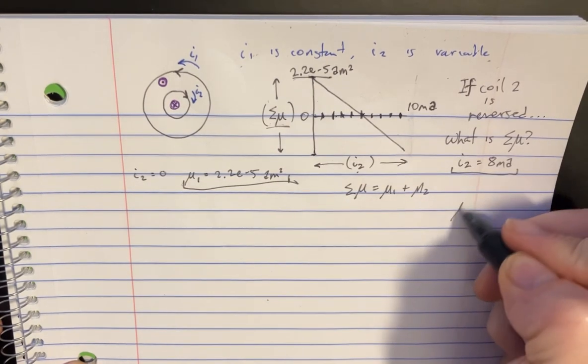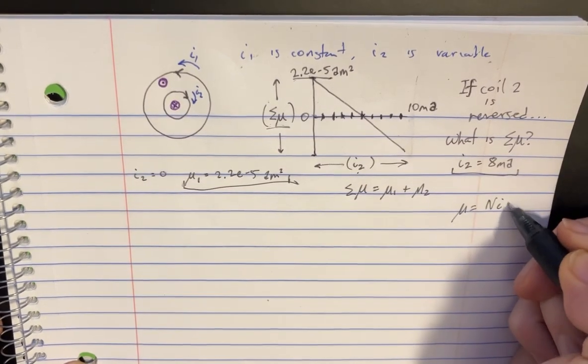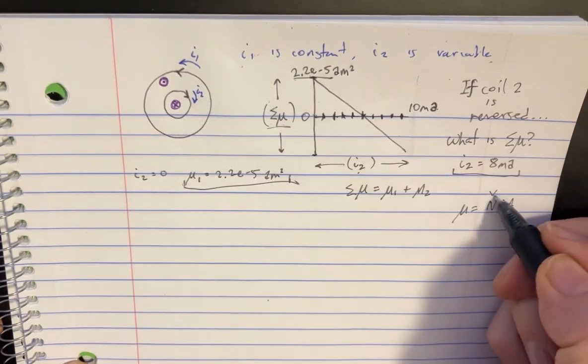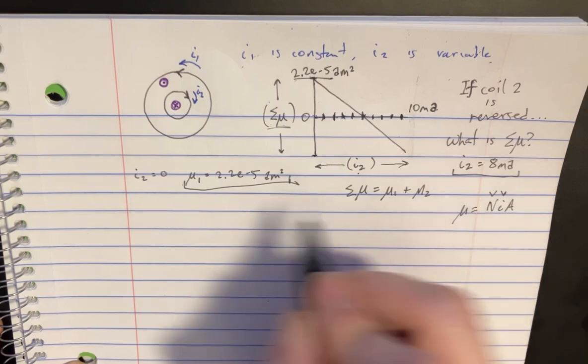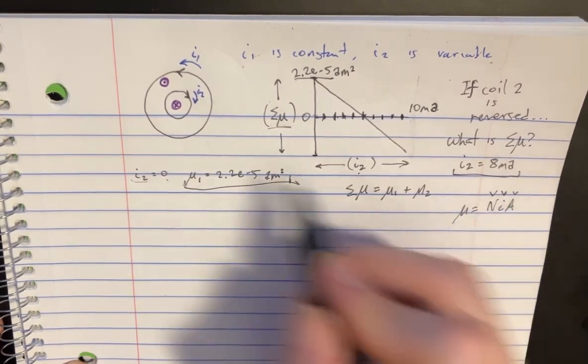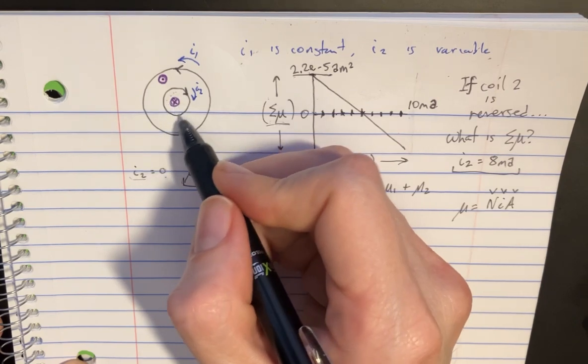Let's recall what M is. M is supposed to be NIA, where N is the number of coils, which in this case is just one, so that'll just go away. The I is the current inside of it. And then the A is the area of the whole loop inside the circle here.